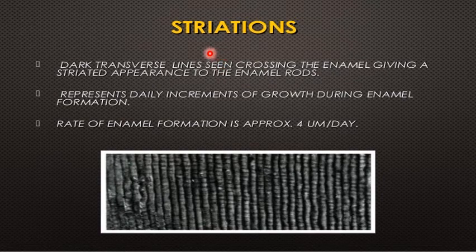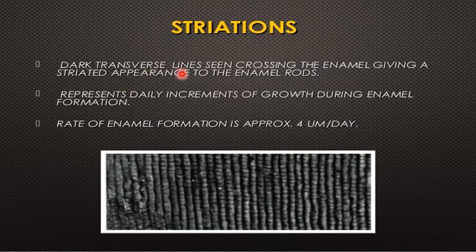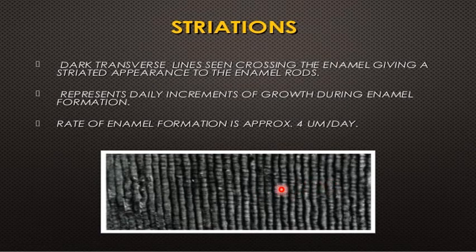Another incremental line in the enamel is the cross striation of Retzius. These lines represent segments of the enamel rod — this is the daily deposition of the enamel. It looks like the von Ebner lines present inside the dentin. The dark transverse lines seen crossing the enamel give a striated appearance to the enamel rod, representing daily increments of growth during enamel formation. The rate of daily enamel formation is about 4 microns per day — the distance between one segment and another is about 4 microns.